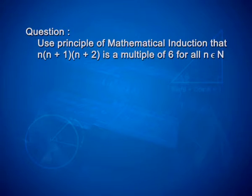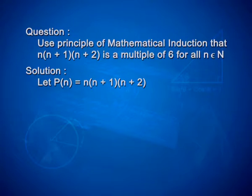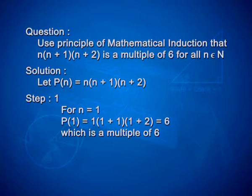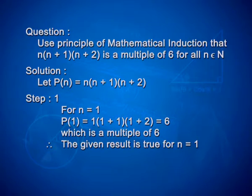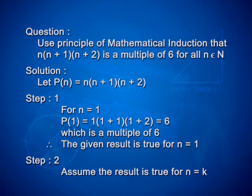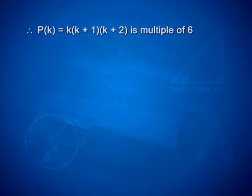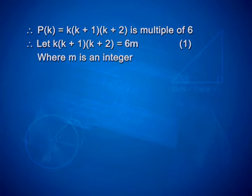Here, you are supposed to frame the statement also. Let p(n) be: n into n plus 1 into n plus 2. For step 1, when n equals 1, p(1) equals 1 into 2 into 3, that is 6, which is obviously a multiple of 6. Therefore, the given result is true for n equals 1. In step 2, assume the result is true for n equals k. Therefore, p of k equals k into k plus 1 into k plus 2 is a multiple of 6. Let k into k plus 1 into k plus 2 equal 6m. Take this equation as 1, where m is an integer.